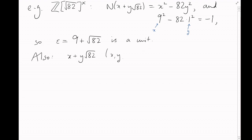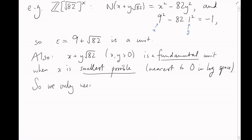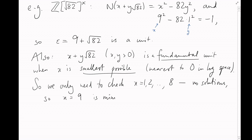It's also not hard to see that a fundamental unit is one with the smallest possible x value — it's nearest to the origin in log space. So we only need to do a quick check of the cases x = 1, 2, and so on up to 8 to check that there are no solutions there. And there aren't, so x = 9, giving 9 + √82, must be the minimal solution.